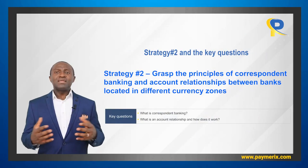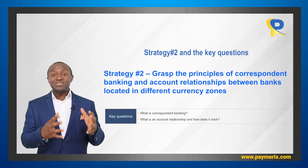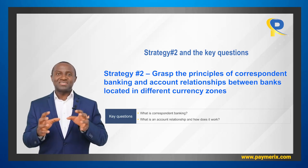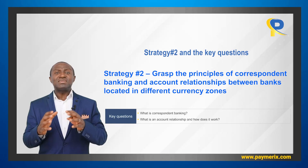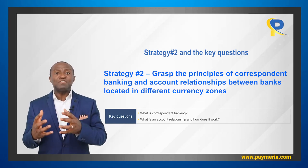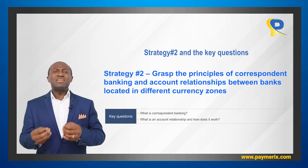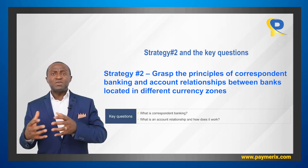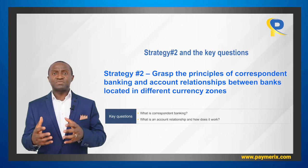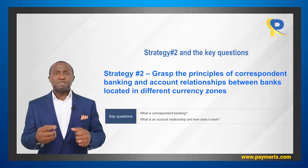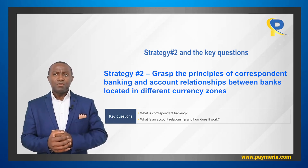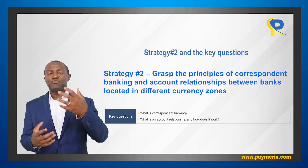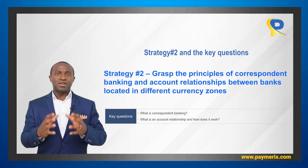Now let's move to the second strategy: grasp the principles of correspondent banking and account relationships between banks located in different currency zones. This is the most important of all four strategies because at the end of the day, payments are about moving funds. And in cross-border transfers, funds move through correspondent accounts. So grasping the principle of correspondent banking and account relationships is essential. The foundation of correspondent banking is the account relationship — we can even say that the account relationship is the passport to access the payment systems of other countries.